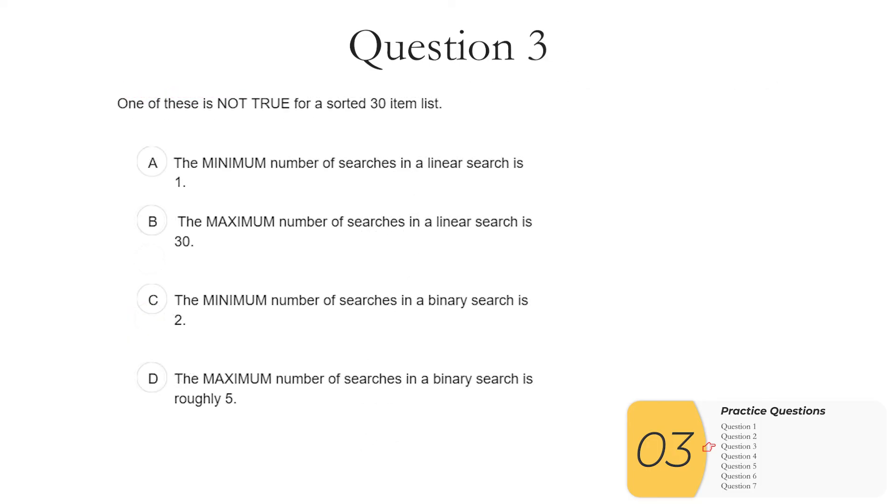Question three. One of these is not true. And then it goes through a whole bunch of scenarios for linear and binary searches. So I've written out all the scenarios here. The linear minimum number of searches is one if it's at the beginning. The maximum number of searches for linear search is 30 if it's at the end, if I have 30 items that is. The minimum for binary is going to be one if it's in the middle. And the maximum if I do the calculation it's about five. So the one that's not true here is C.